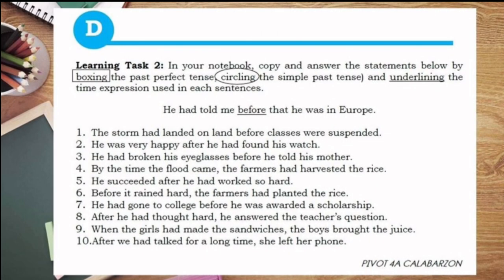For learning task number 2, the instruction is: in your notebook, copy and answer the statements below by boxing the past perfect tense, circling the simple past tense, and underlining the time expression used in each sentence. There is an example where the time expression 'before' is underlined. In that example, the past perfect tense is 'had told' — put a box around it — and the simple past is 'was' — encircle it. From this example, you'll get a pattern for how to identify the past perfect tense and the simple past tense.